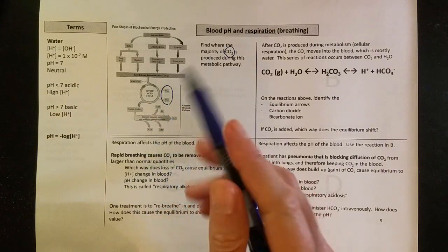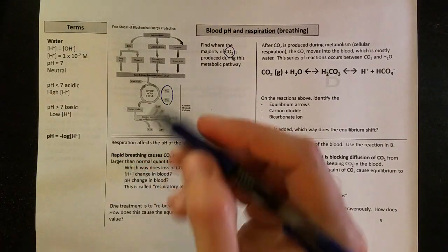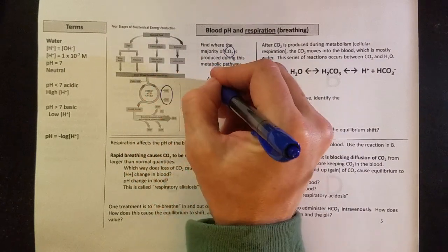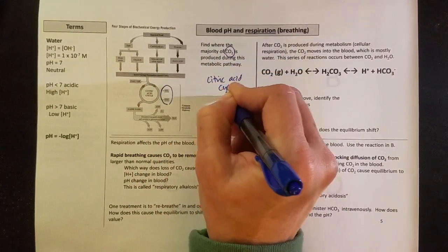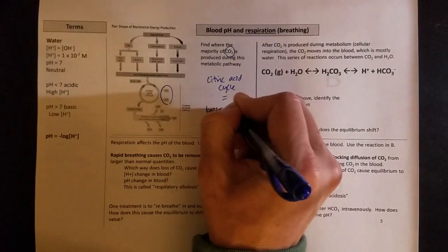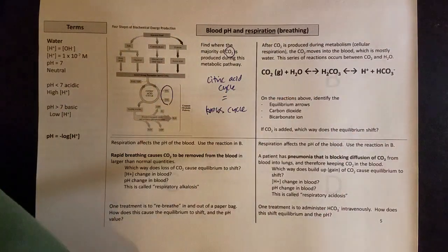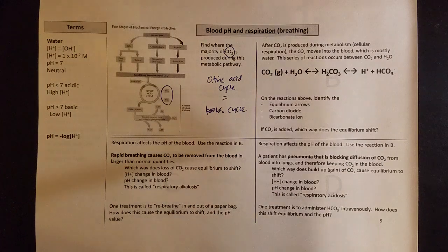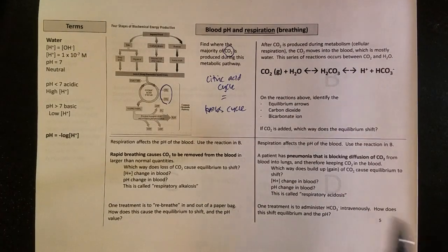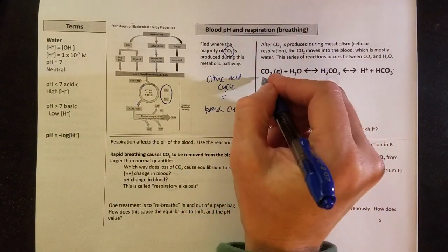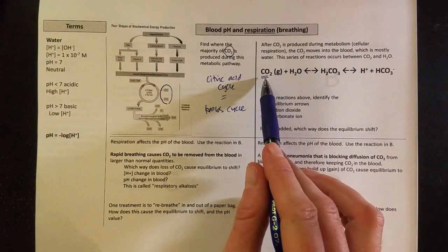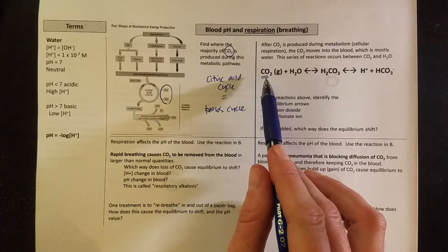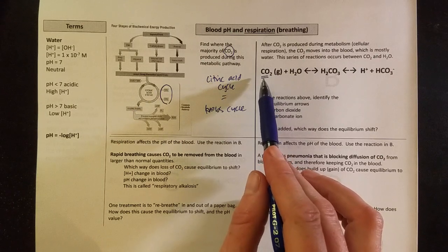So most of the carbon that we eat just gets breathed back out as carbon dioxide. And a little note, that citric acid cycle that we see there is the same as the Krebs cycle. In our bodies, that carbon dioxide plays an important role with acids and bases. At first glance, we don't see an H in it, we don't see an OH, so it doesn't seem to be an acid or base.